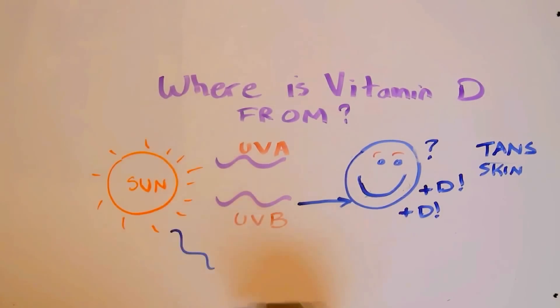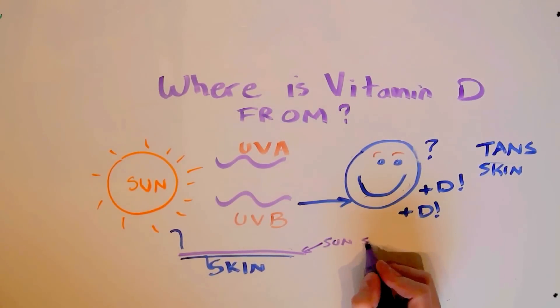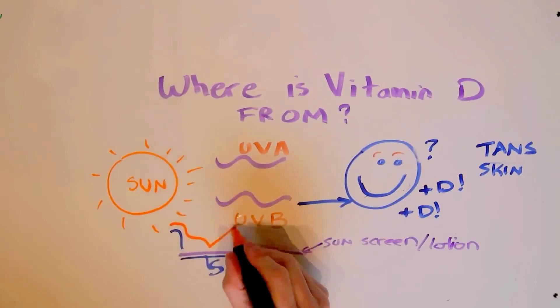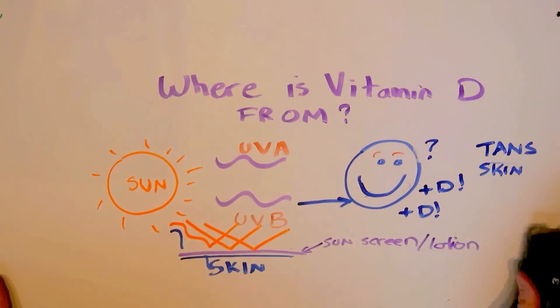So UVB is great, right? So get more sunshine. Well, the problem is that most people, when they go out into the sun, they don't want that UVA, and so they wear sunscreen. Sunscreen, or sun lotion, blocks a lot of these rays from getting to us.